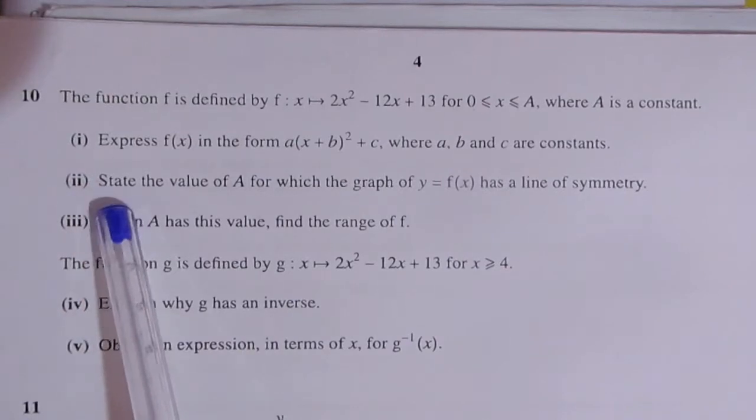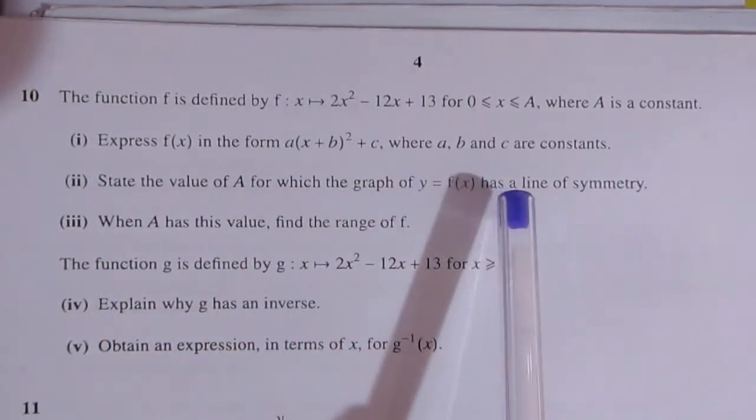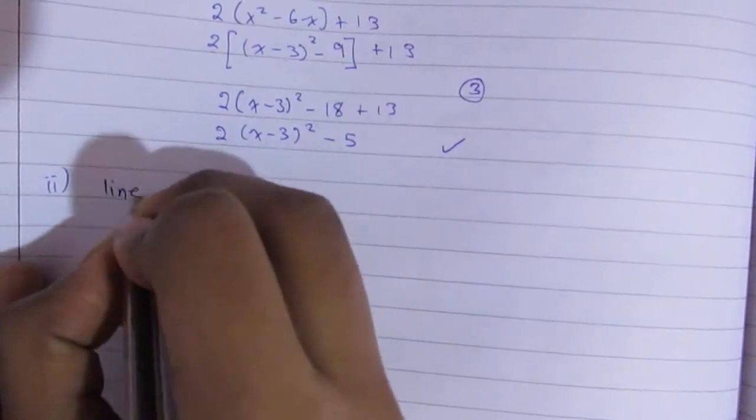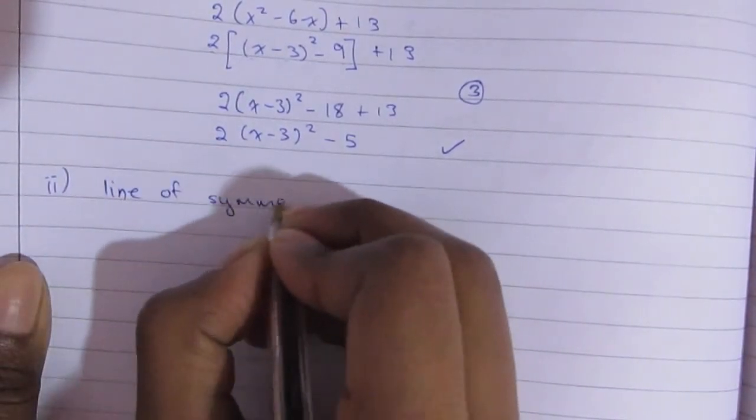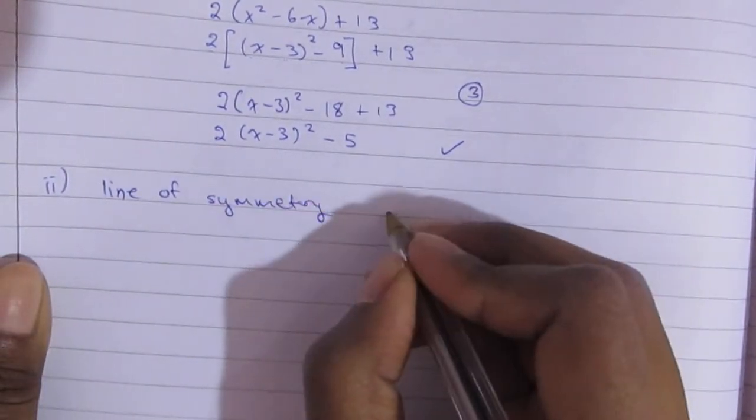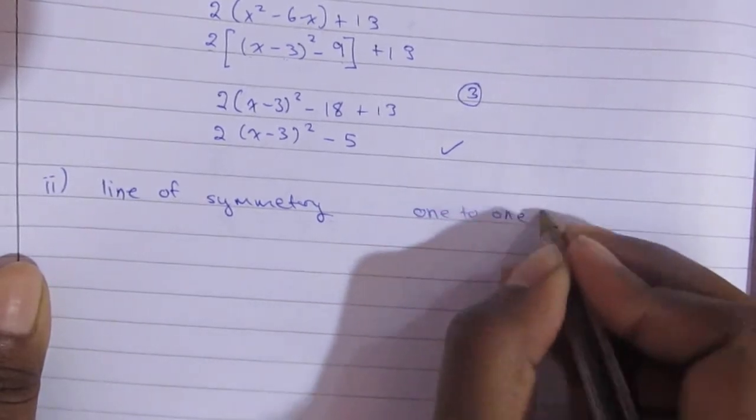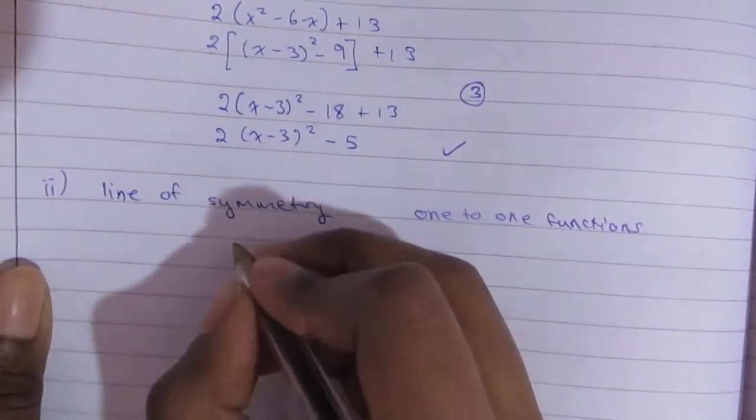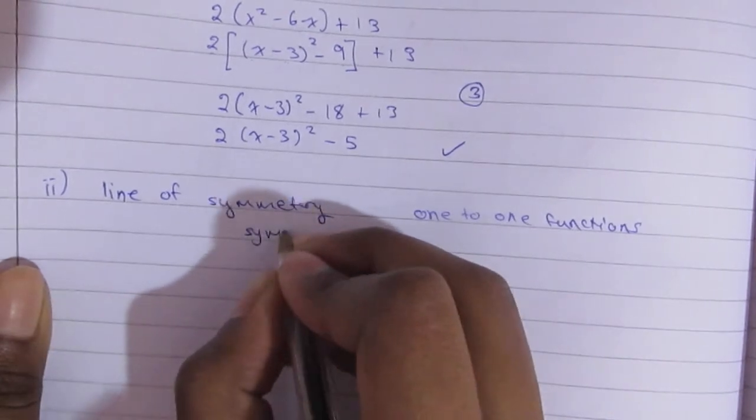Now part 2 is asking us to state the value of a for which the graph of y equals f(x) has a line of symmetry. So when it does have a line of symmetry, it can conclude that you can have a part where it is a one-to-one function. So I'm just going to draw out the curve for you.